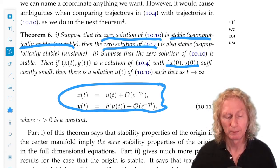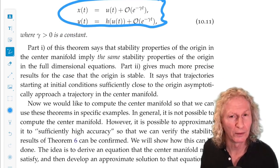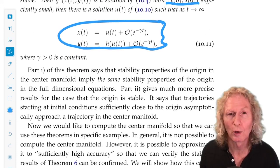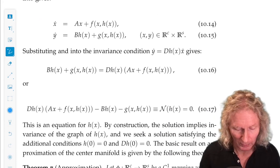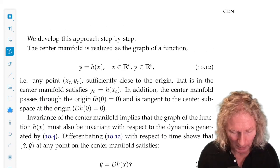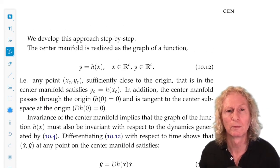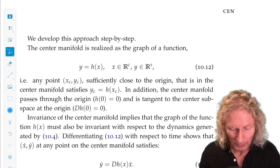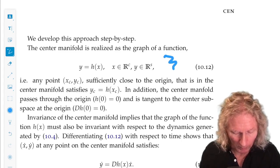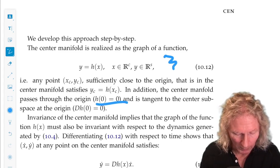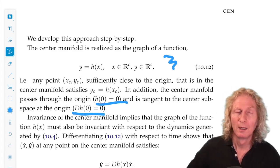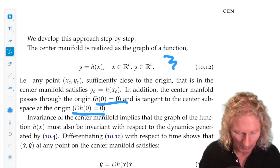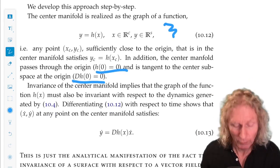But we need to get our hands on the center manifold in this form in order to realize these nice things. So, we need to develop an equation for the center manifold. So, the center manifold has this form. Remember, these additional properties passes through the origin is tangent to the center subspace at the origin, and we can differentiate it.